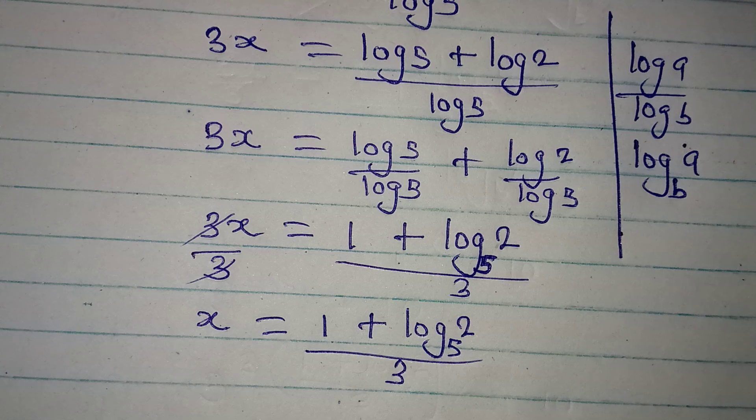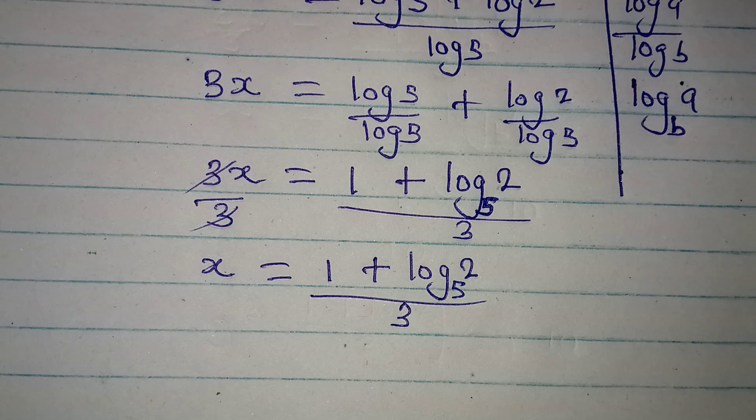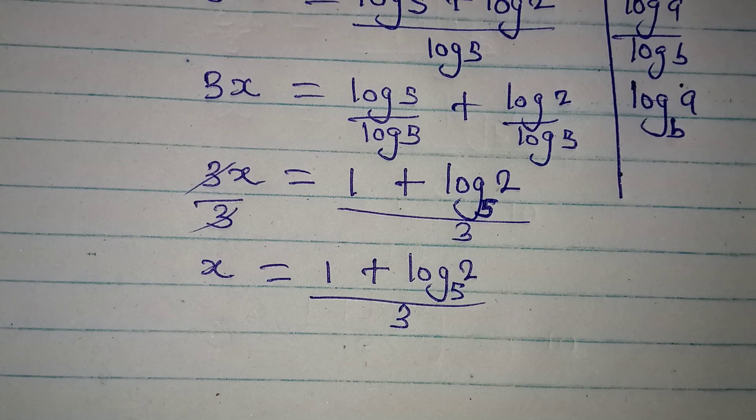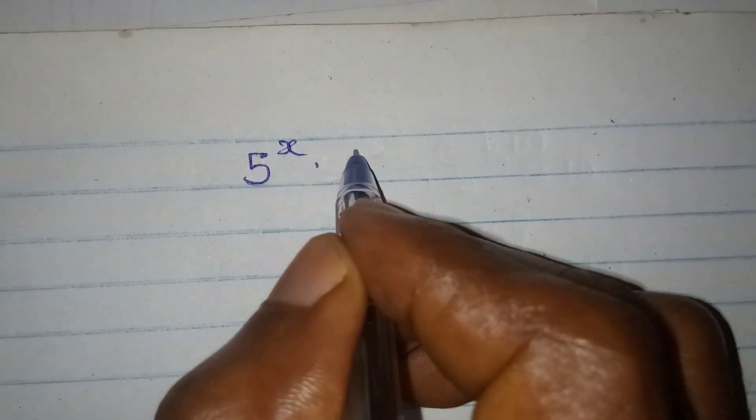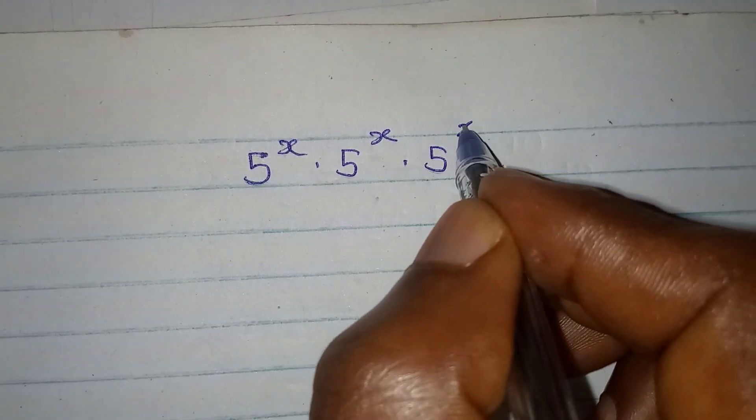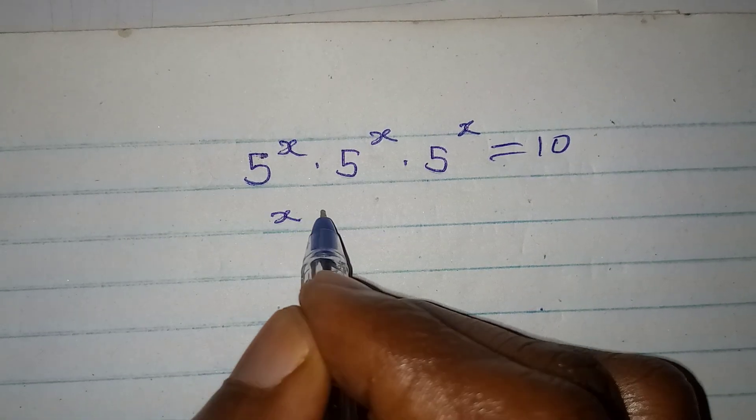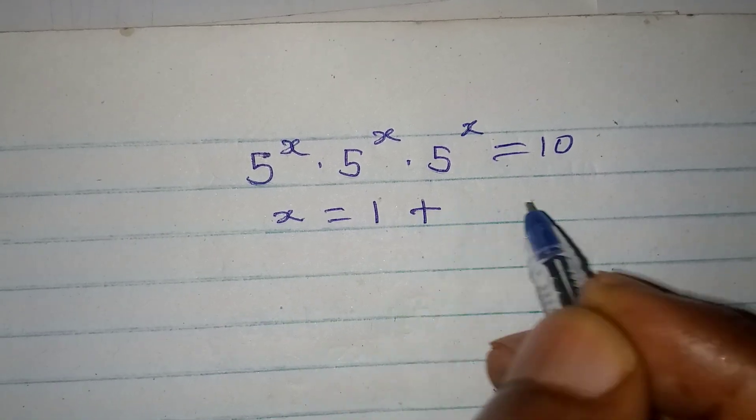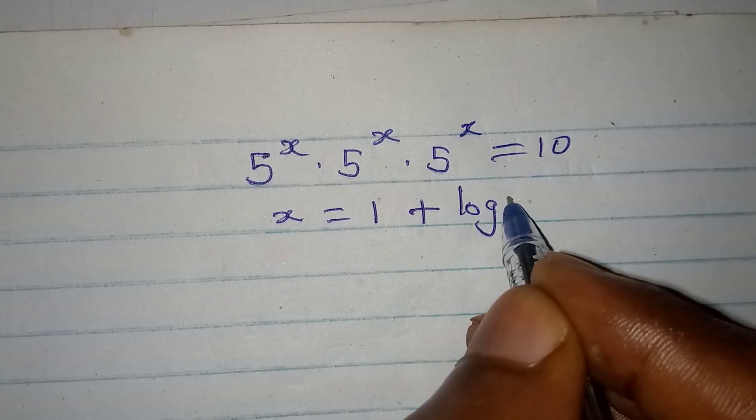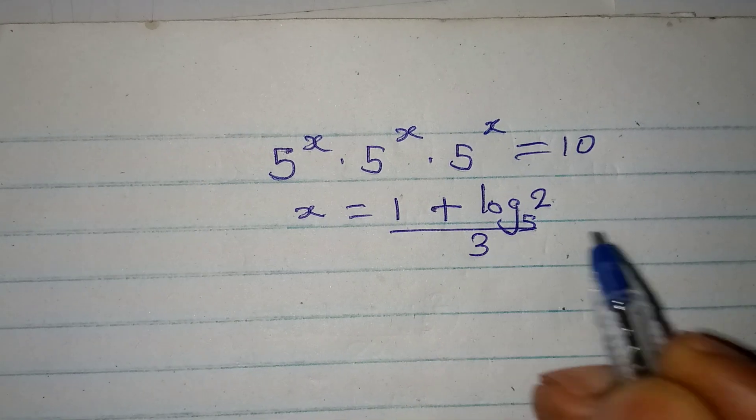Now, remember that this may not be correct, so we have to check it right away. And to check this, what is our original equation? Our original equation is 5 to the power of x times 5 to the power of x times 5 to the power of x equals 10. And now we have that x is equal to 1 plus log 2 to base 5, everything over 3.